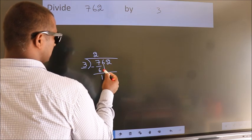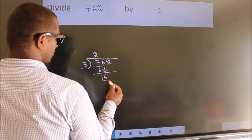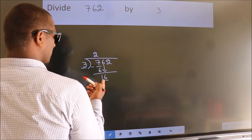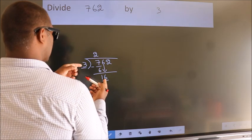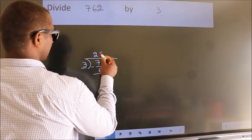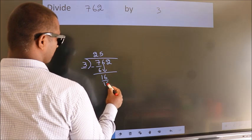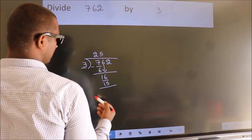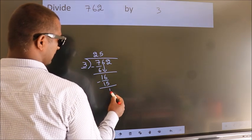bring down the beside number. So, 6 down, making 16. A number close to 16 in 3 table is 3 5s, 15. Now we subtract and get 1.